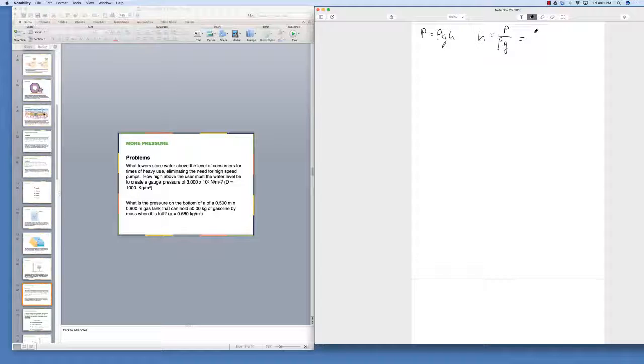Here the pressure that we want is 3 times 10 to the fifth, ρ is 1,000, and g is 9.8 meters per second squared. Do the math here, and you get 30.6 meters high. So in order for them to have the gauge pressure that they want, which is 3 times 10 to the fifth pascals, they have to have a water tower that's 30.6 meters above the consumers.